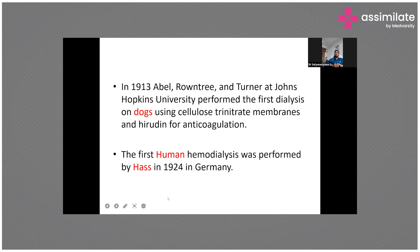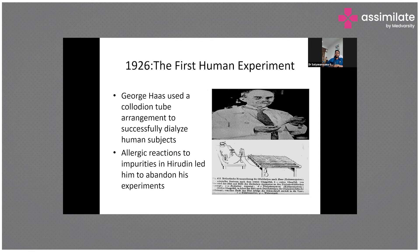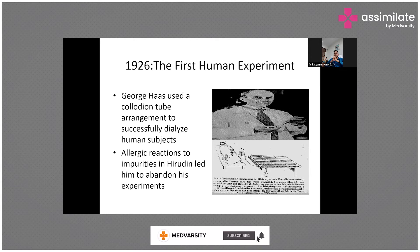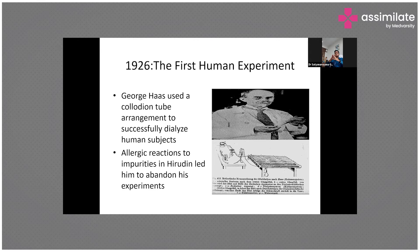The anticoagulant they used was hirudin. The first human hemodialysis was performed by German physician Dr. Haas in 1924, but unfortunately there were many complications and he had to abandon the procedure. He used a collodion tube arranged in parallel and used hirudin as anticoagulant. Hirudin, derived from leeches, had many impurities that caused reactions, which forced him to abandon the procedure.